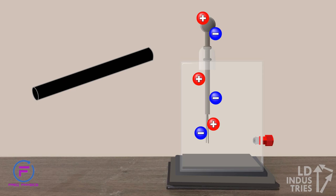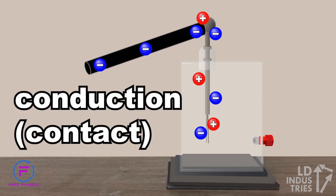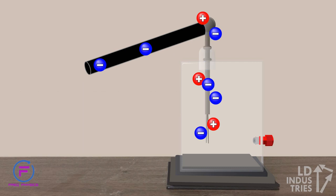When the negative rod touches the electroscope, conduction occurs. Conduction occurs when there's contact between charged and neutral objects. This allows some of the electrons from the negative rod to move into the electroscope. Since the electroscope is made from metal, which is an electrical conductor, the electrons spread evenly throughout, including into the leaf of the electroscope.